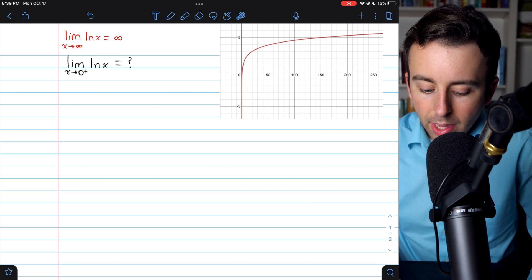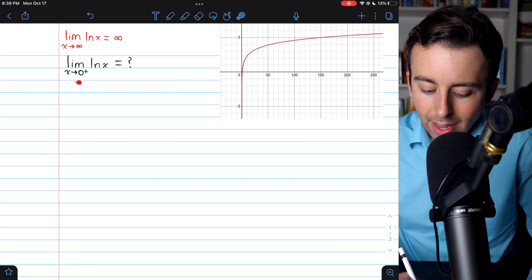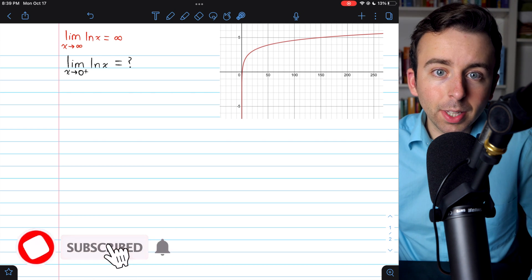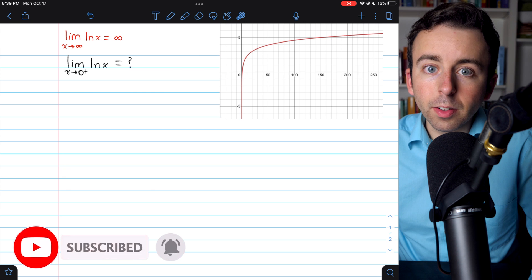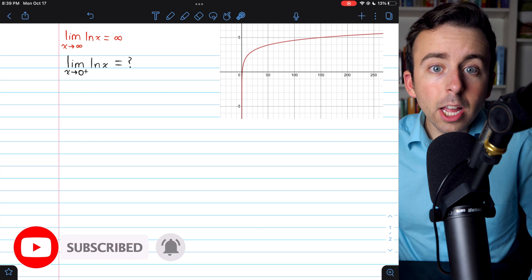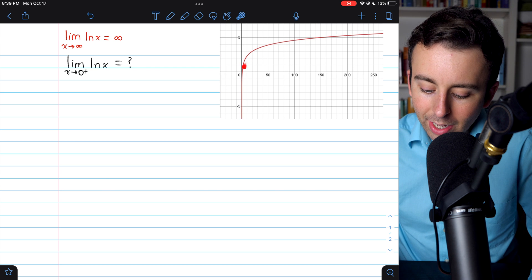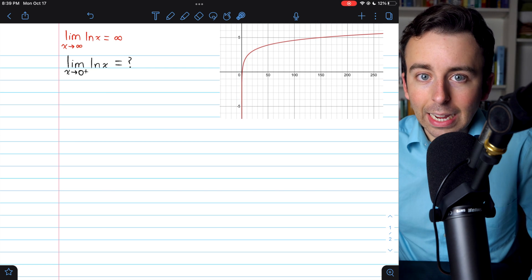We're going to evaluate the limit of the natural log of x as x approaches 0 from the right. Of course, we can't plug 0 in because natural log of 0 is undefined. But if you understand how the function works, or you've seen the graph, we can see that the limit should be negative infinity.